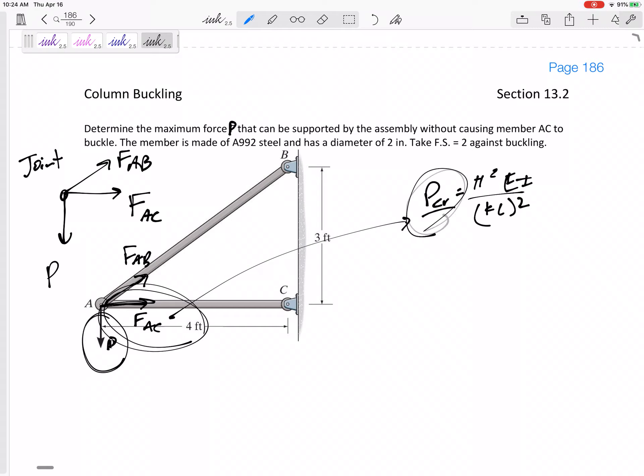So what is FAC? Well, at this joint right here, I only have two equations for every joint: sum of the forces in X and sum of the forces in Y. I have three unknowns: I don't know P, I don't know FAC, I don't know FAB. There are different ways to do this, but the way I like to do these problems is the same way. I'm going to start here. Before I get to the buckling force, let me just do some statics, method of joints.